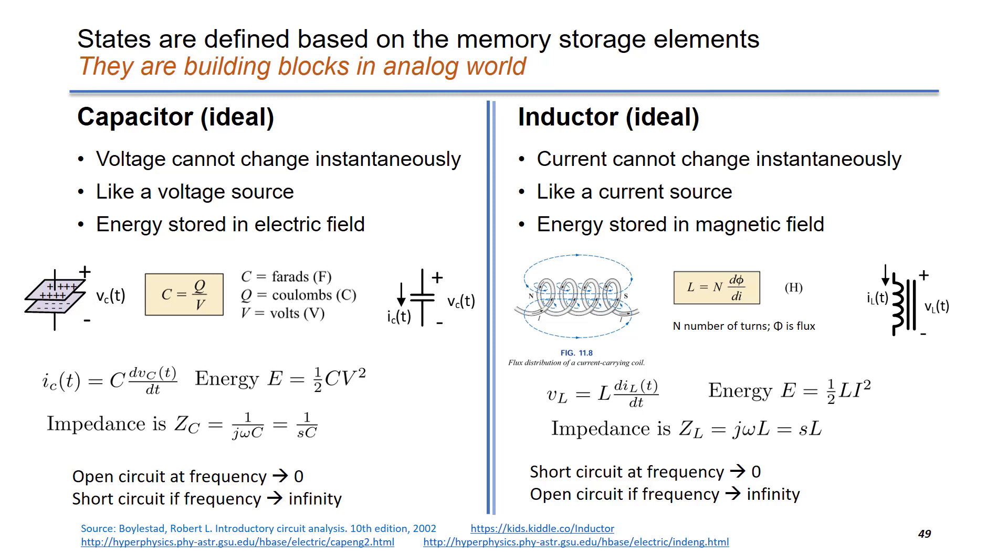Just to recap, capacitor has very high impedance at low frequency, but very low impedance at high frequency. On the other hand, we have inductor. It has very low impedance at DC, low frequency, but very high impedance at high frequency.